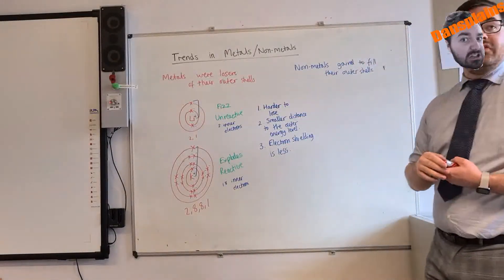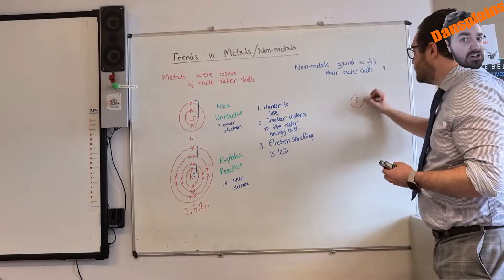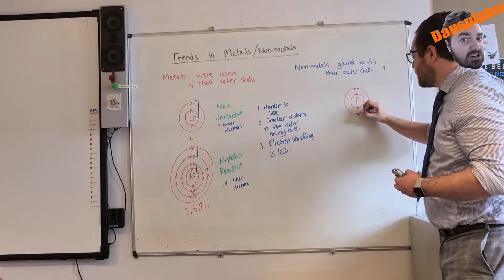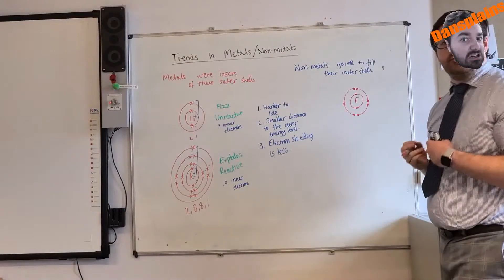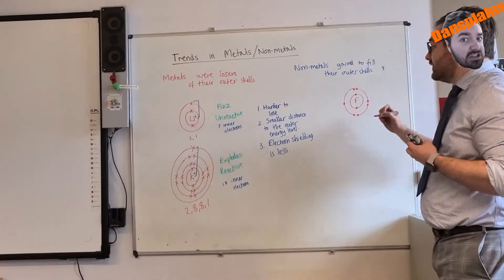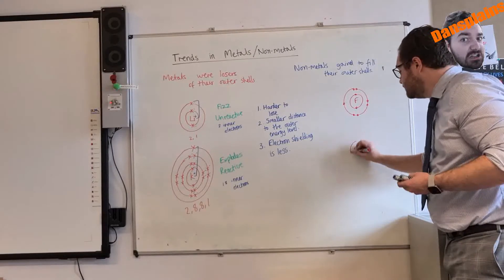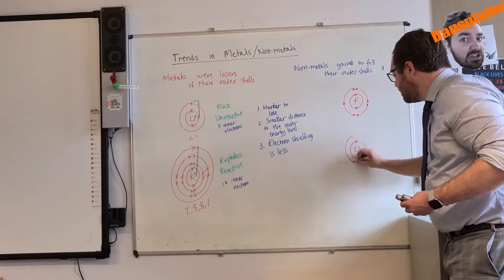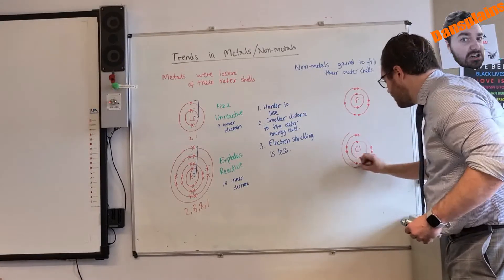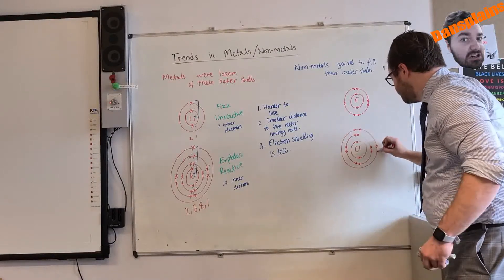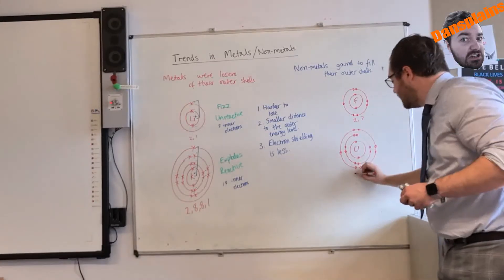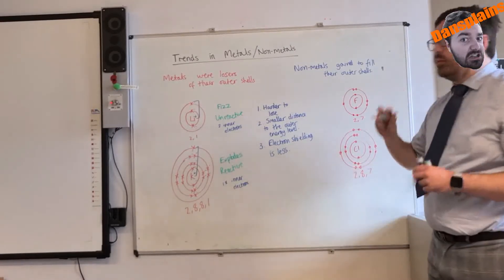For nonmetals, we obviously have it the other way around. For fluorine, which is 2,7, it will be much easier for it to gain electrons if it's at a smaller distance than chlorine, which is 2, 8, 7. So here I have 2,7, here I have 2, 8, 7.